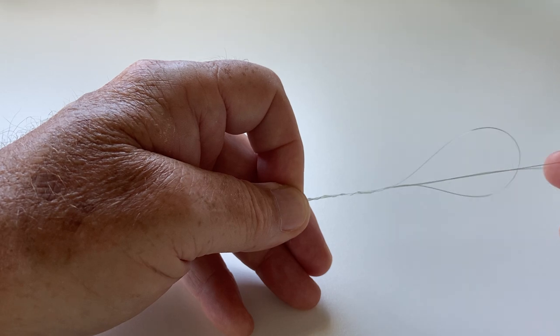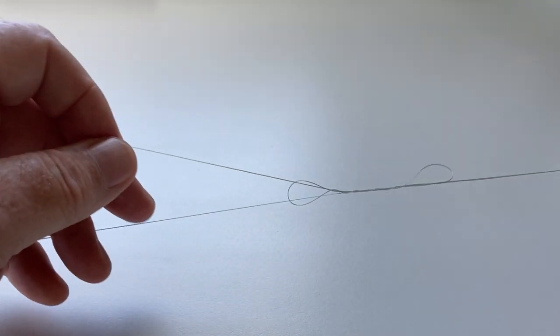Then take the end of the line and pass it through the loop. Pull tight.